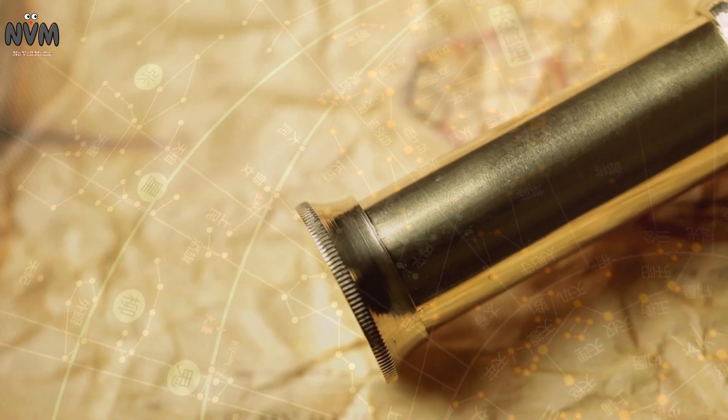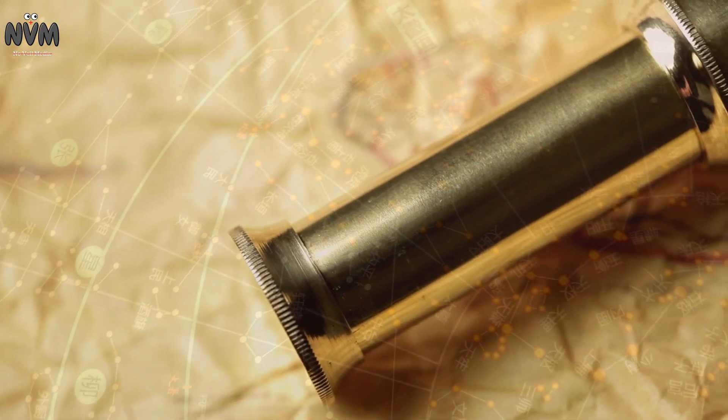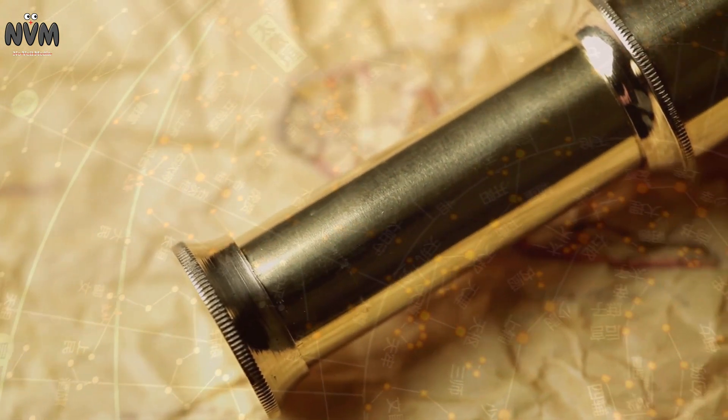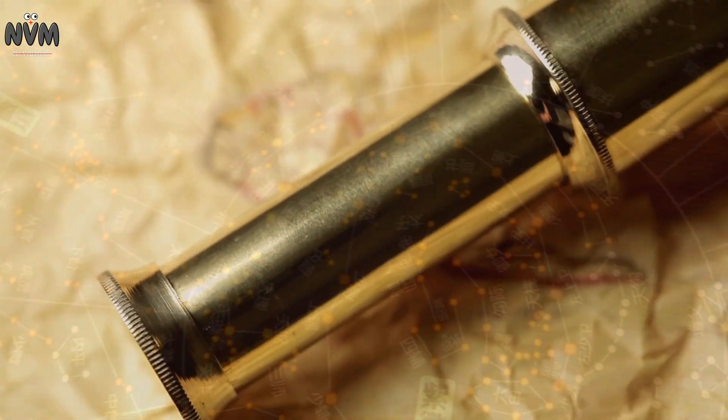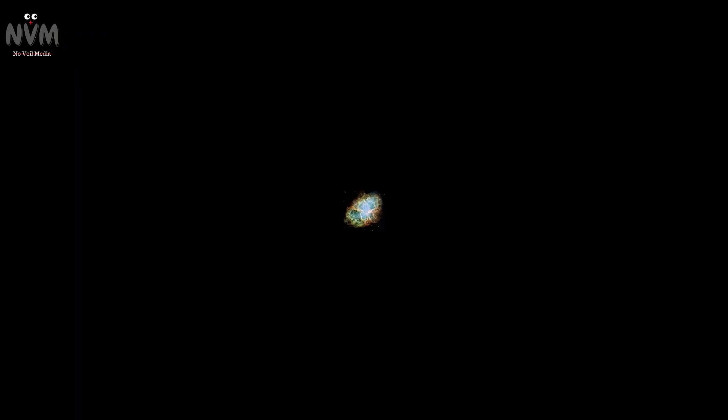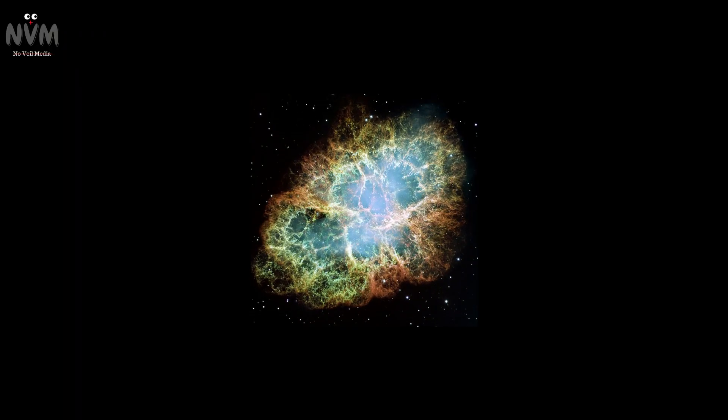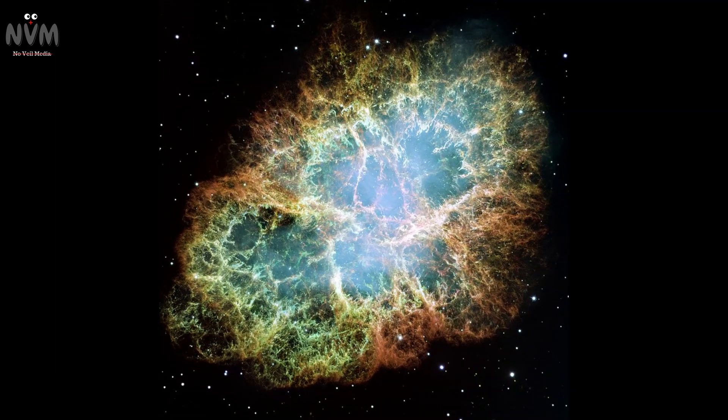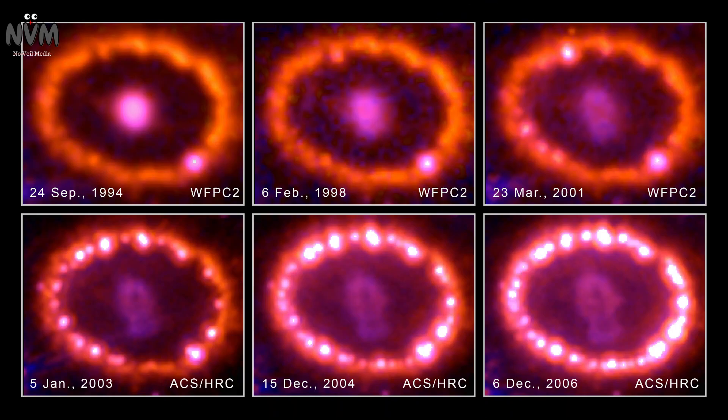Throughout history, there have been some famous supernovae observed and recorded by astronomers. One of the most well-known is SN 1054, which gave birth to the Crab Nebula. And who can forget SN 1987A, a relatively nearby supernova that we observed in real time.